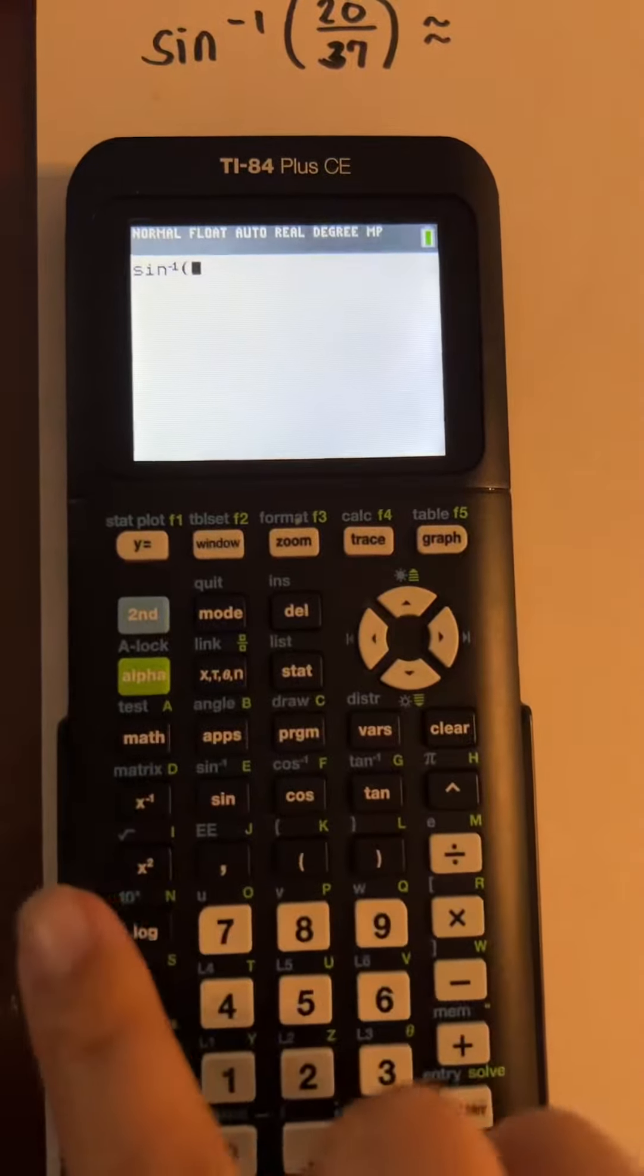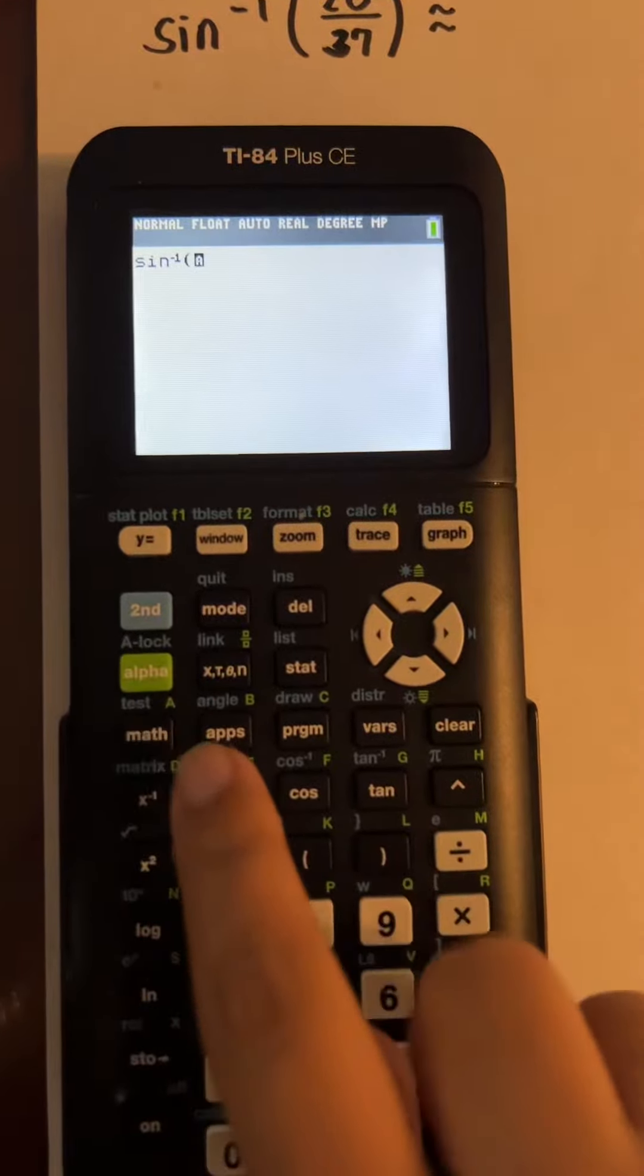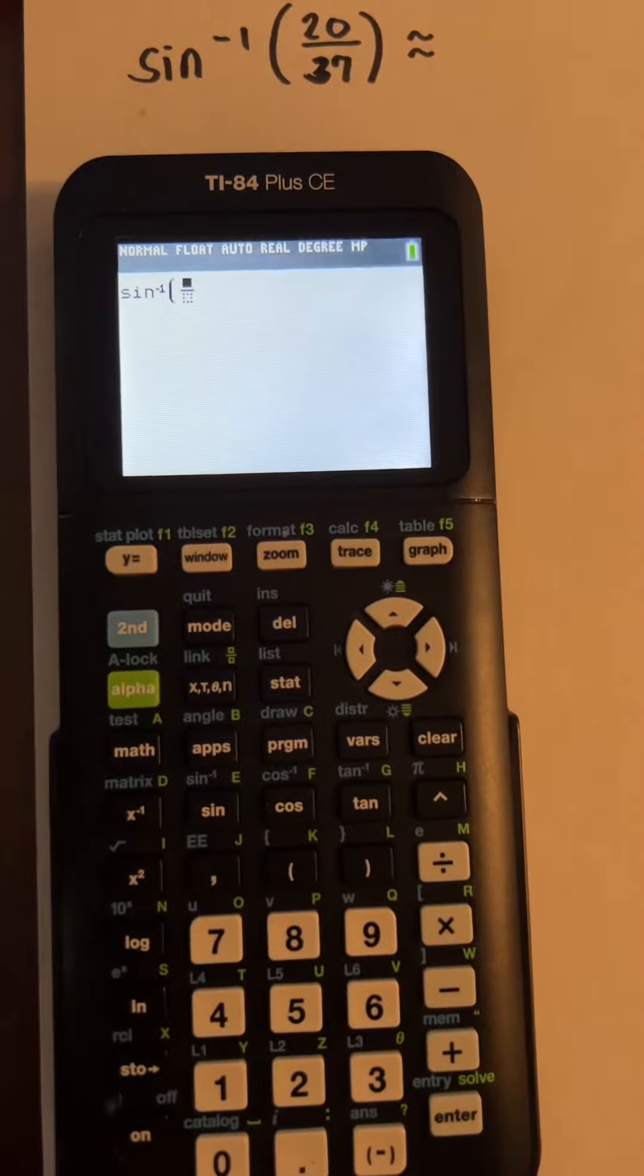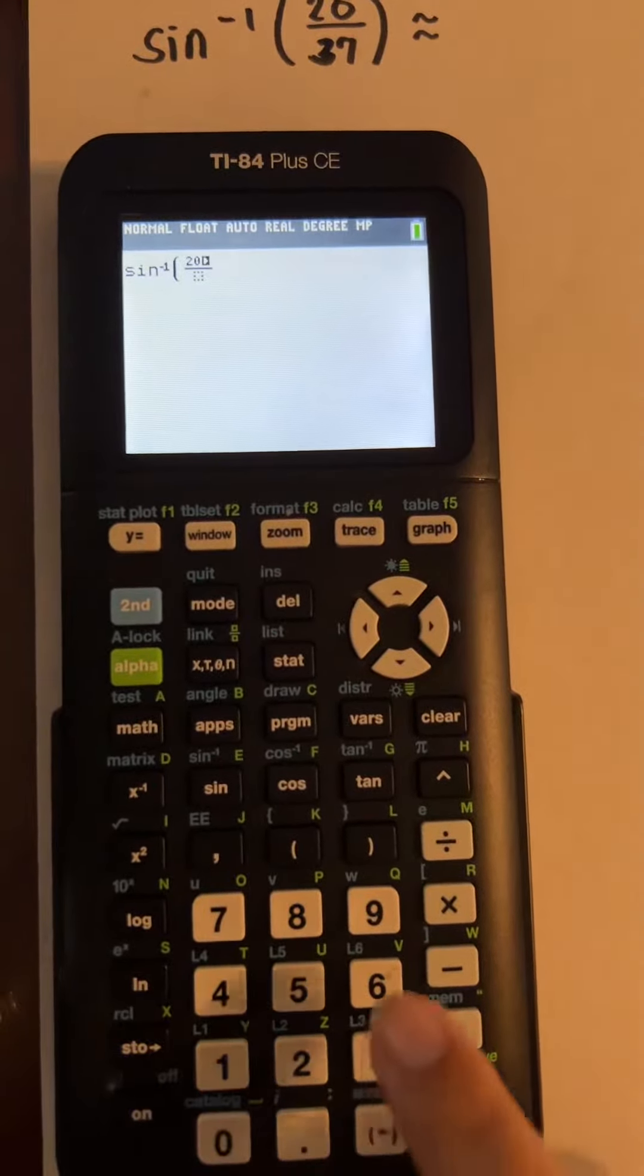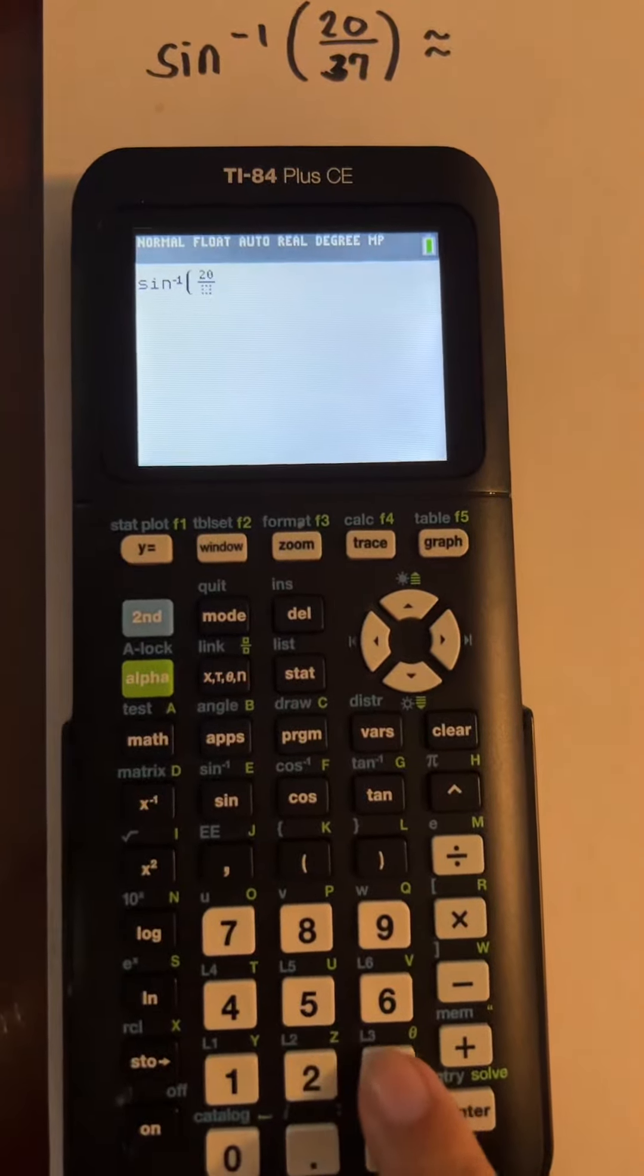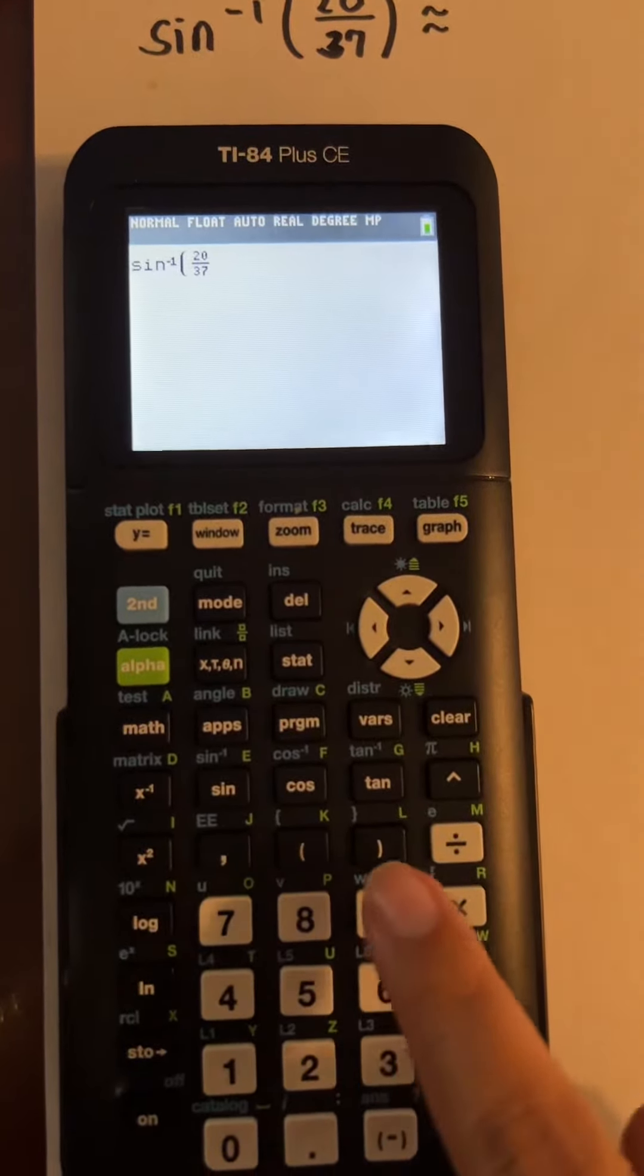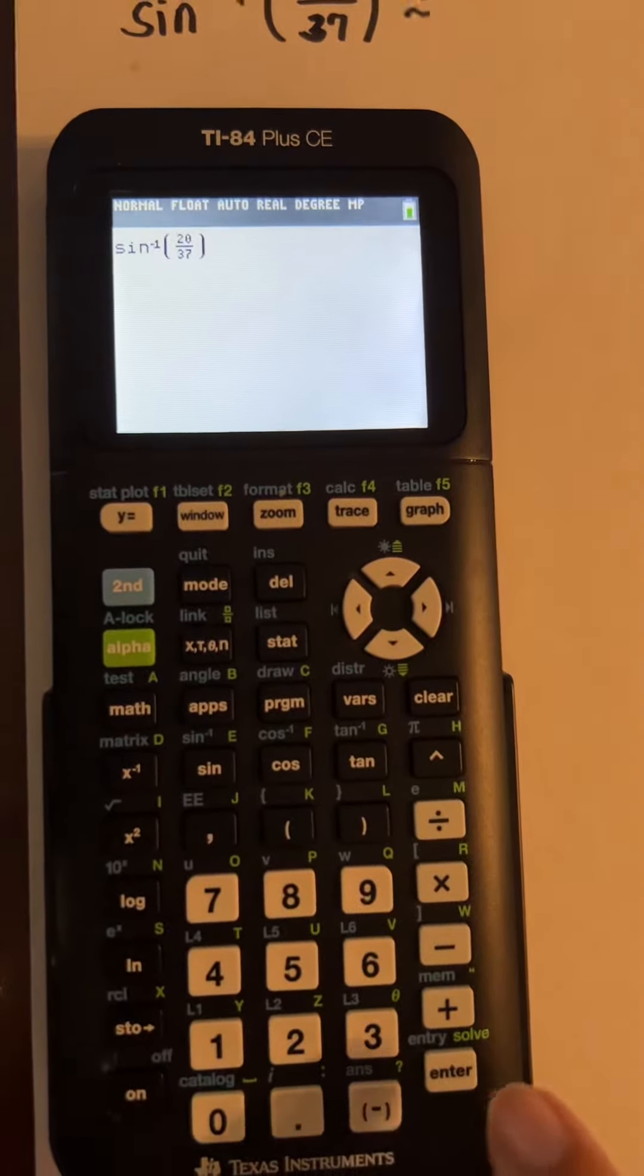So to do fraction, you go alpha and this button, and then you have now the fraction. You can enter now 20, and then arrow down 37. And then if you want to close it with parentheses, click that right button or arrow and then close parentheses.